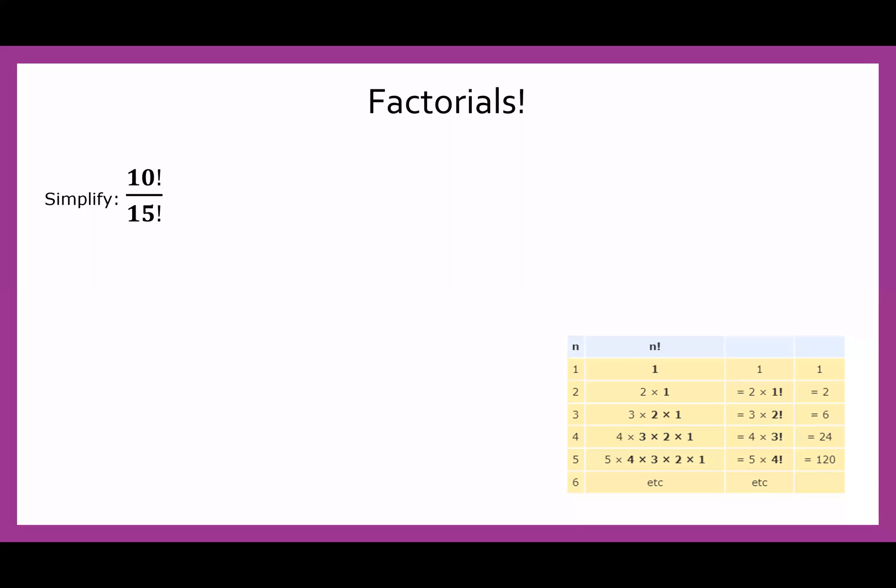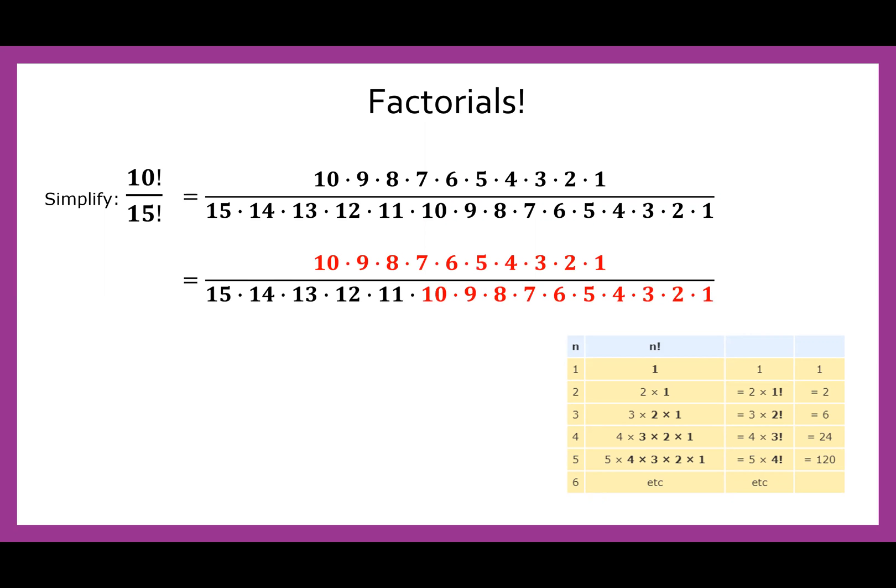So if I have 10 factorial over 15 factorial on the numerator, I have 10 by nine by eight down to three, two, one. And in the denominator, I start at 15 and go all the way down to one. And we can see that there's a lot of cancellation here. So all the numbers in red, we see there in the numerator, as well as the denominator, meaning that they can cancel out. And what we're left with is just one over 15 by 14 by 13 by 12 by 11, leaving us in simplified form as one over 360,360.